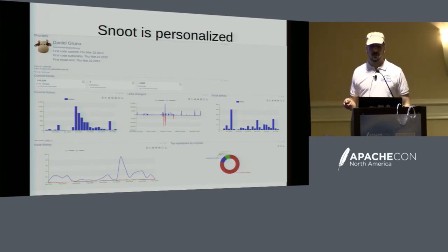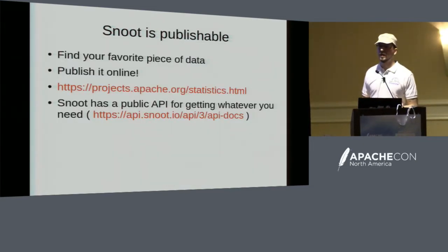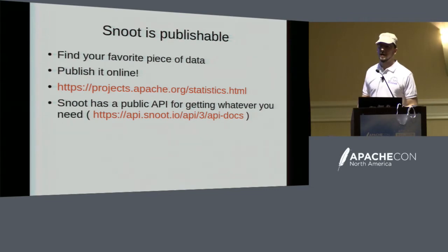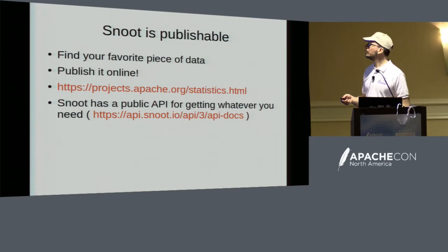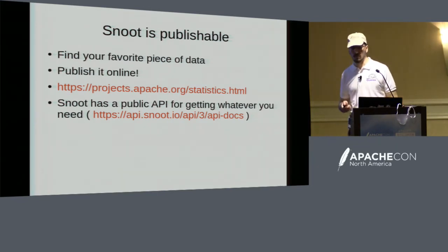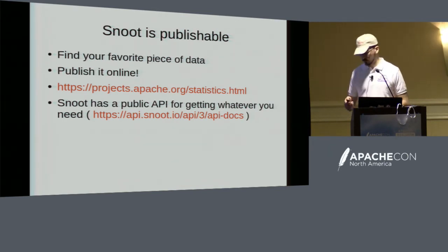It's also cool because you can go in and see when someone is having an anniversary at the ASF. It's publishable, which means you can get a widget and publish every single chart or piece of data from Snoot on your website — it will pick the live data and show that. We actually have that on projects.apache.org. It's got a public API — I think it's like 120 pages of API documentation. So you can grab and display it publicly if you have a token.